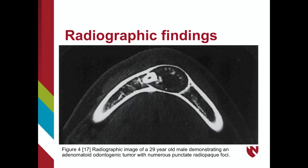In this computed tomography image of a 29-year-old male with an adenomatoid odontogenic tumor, numerous punctate radiopaque foci are arranged circularly at a specific distance from the margin. The buccal-lingual cortex are expanded slightly and thinned by the lesion as well.